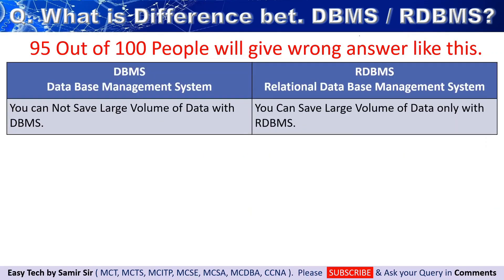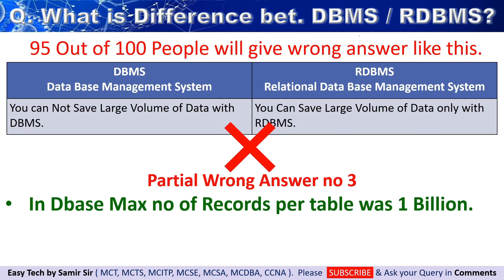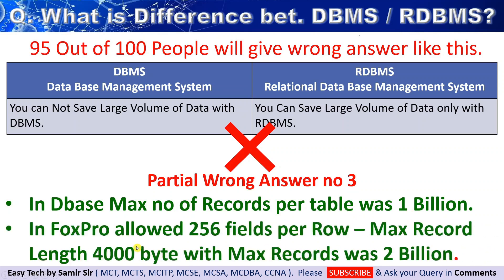The next wrong answer is that in DBMS you cannot save large volumes of data — you can save large volumes of data only with RDBMS. This is also a partially wrong answer. In DBASE, the maximum number of records per table was 1 billion. In FoxPro, it allowed 256 fields or columns per row, maximum record length of 4000 bytes, and maximum records per table of 2 billion. So 1 billion and 2 billion are not small amounts of data — this is a partially wrong answer.